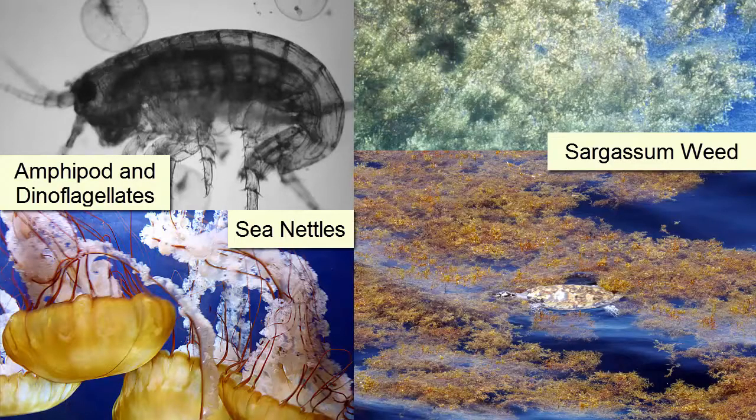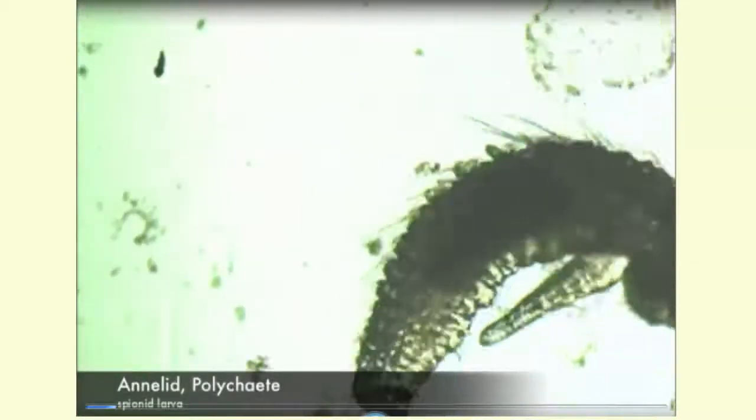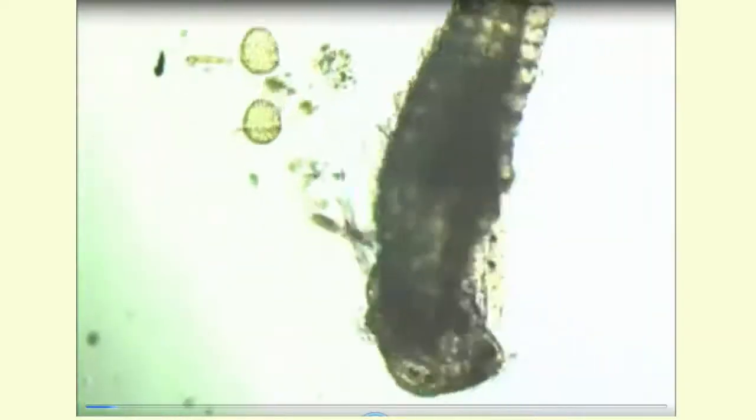Microscopic organisms and floating seaweeds have very different relationships with ocean viscosity. For a microscopic organism, the viscosity of seawater can feel quite strong — like swimming through honey for us. Small organisms can create so much drag when moving through the water that they pull or spin the other small organisms around them.